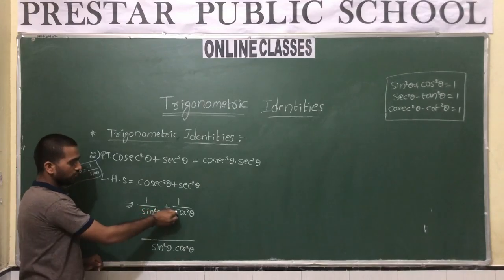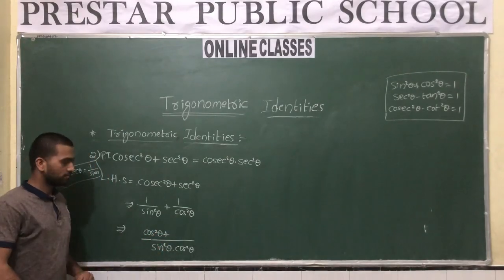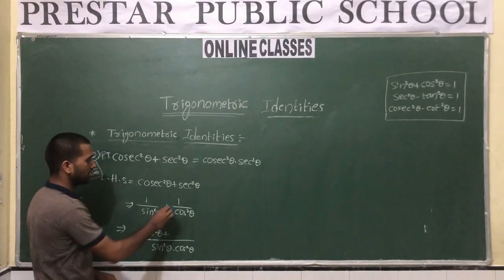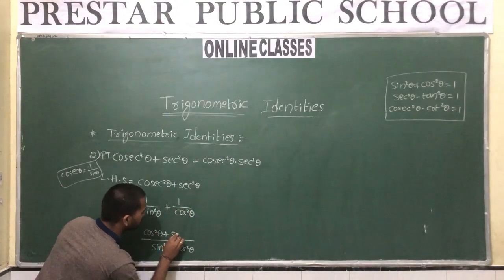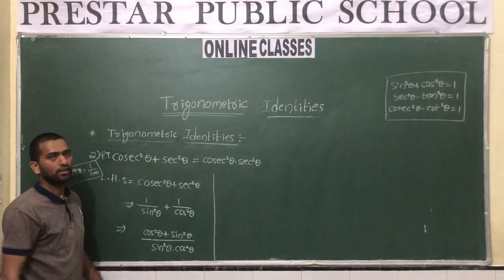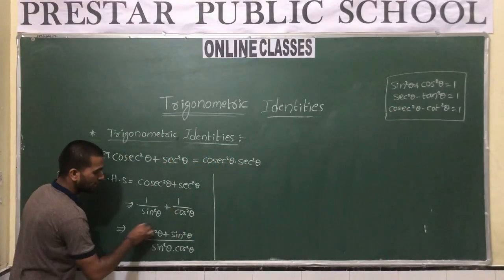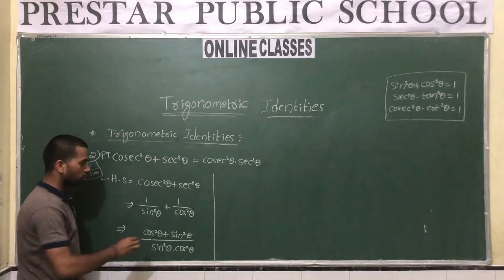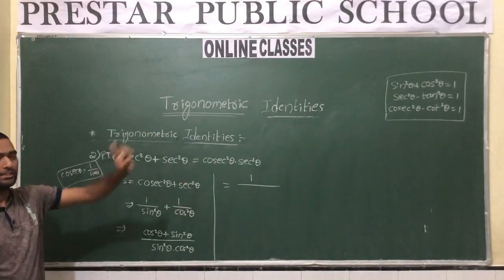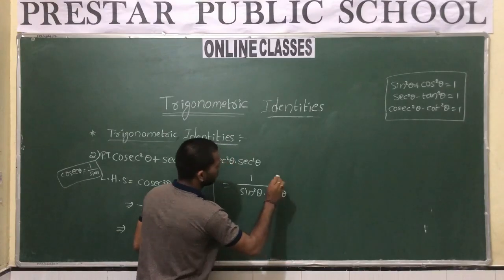With LCM sin²θ · cos²θ in the denominator: the first term becomes cos²θ and the second term becomes sin²θ in the numerator. So we get (cos²θ + sin²θ) / (sin²θ · cos²θ). According to identity number 1, sin²θ + cos²θ = 1, so the numerator becomes 1.